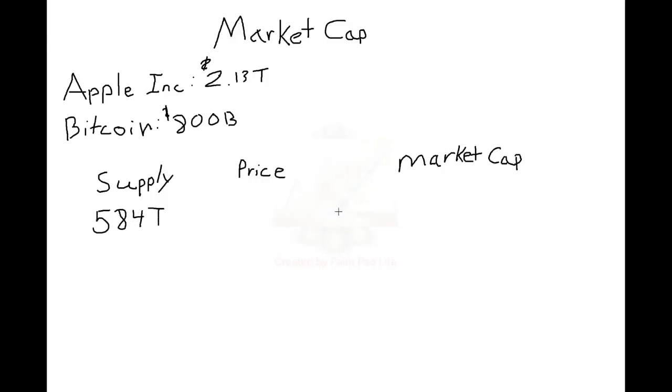There are roughly 584 trillion SafeMoon coins in circulation at the time of making this video, and the price is around 0.00005, giving us a market cap of slightly over 3.5 billion. The price of an asset is arbitrary. It does not matter. Market cap is the way to rank these currencies and these assets.